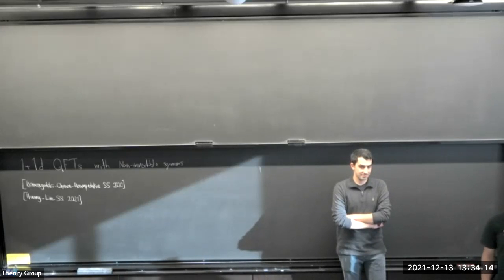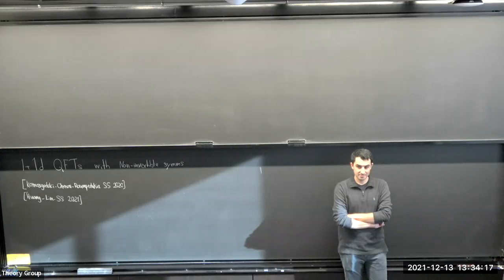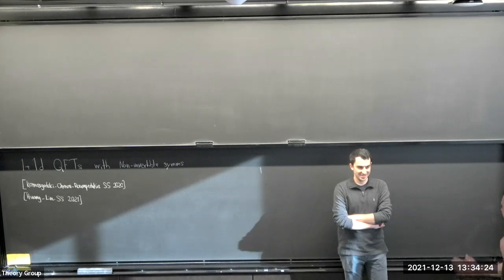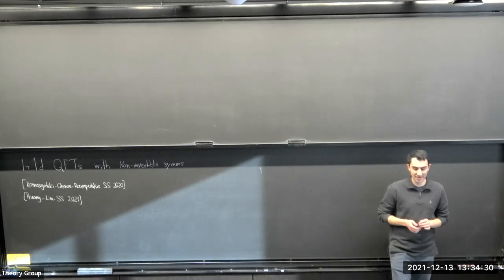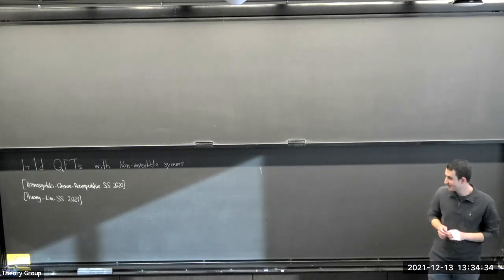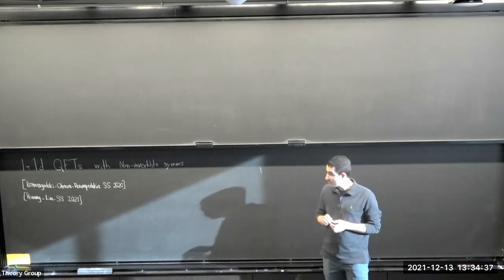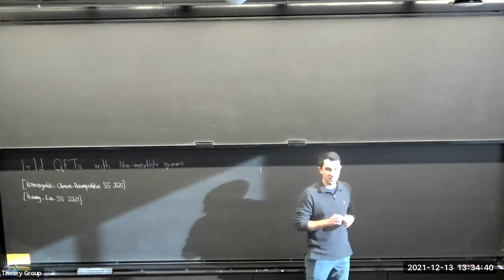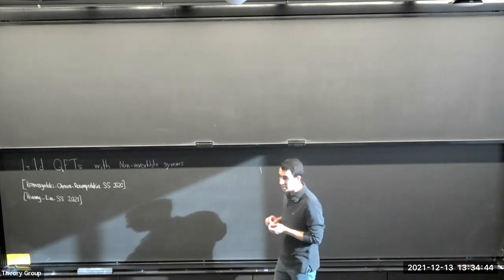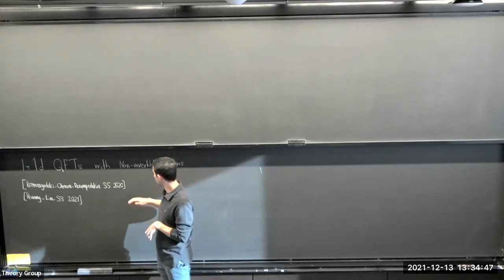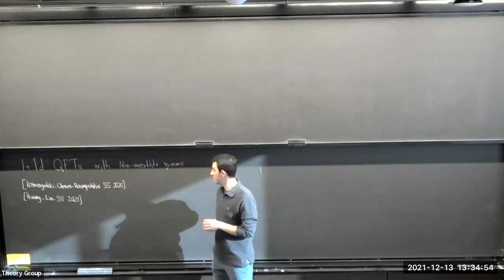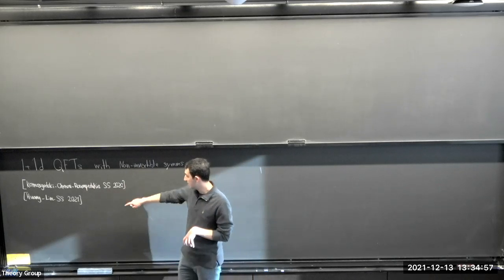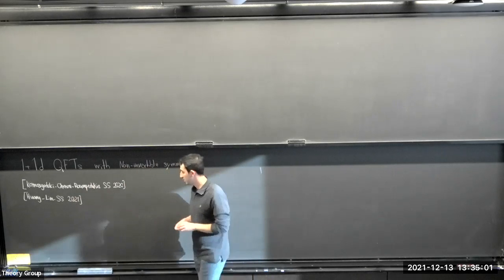Welcome everyone to the Kadanoff seminar. Today we're very happy to have Sahan Seifnashri from Stony Brook, who's going to be telling us about non-invertible symmetries and QFTs in 1+1 dimensions. Thank you very much for inviting me to give this seminar. It's an honor and it's really great to be here in Chicago. Today I'm going to talk about 2D TQFTs with non-invertible symmetries, mostly based on two papers — one with Zohar Komargodski, Kantaro, and Konstantinos at UCLA, and more recent work with Jimmy Huang.